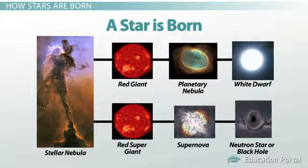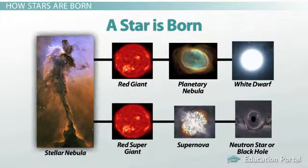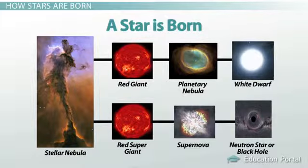This diagram shows the life cycle of a star. A star starts in a stellar nebula. Then, depending on size, it takes one of two paths.